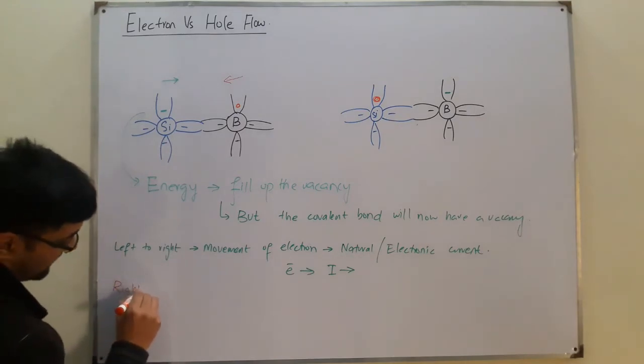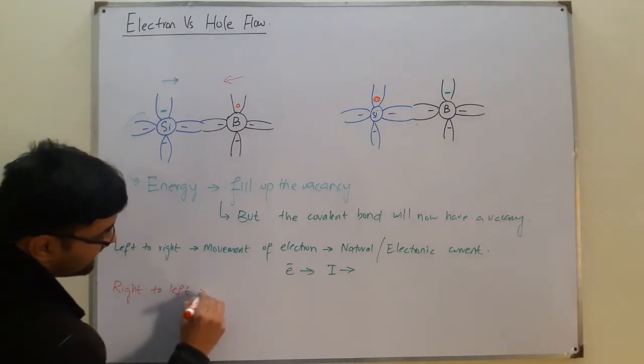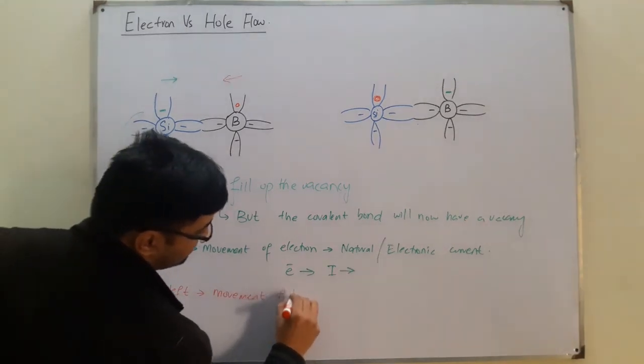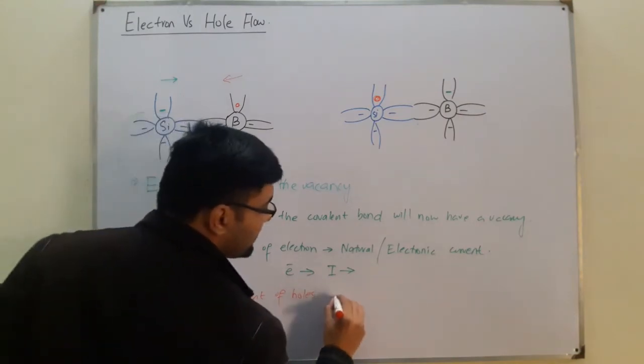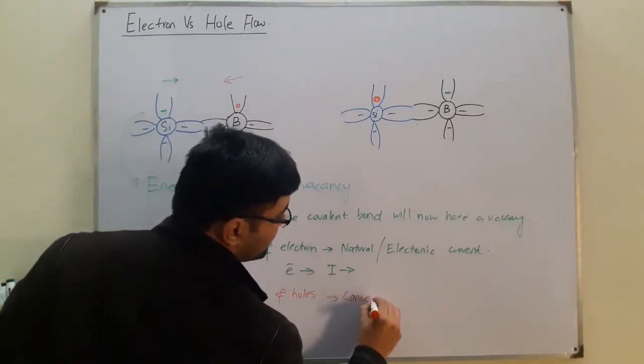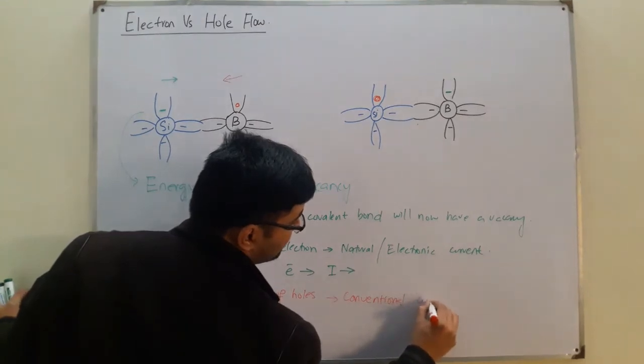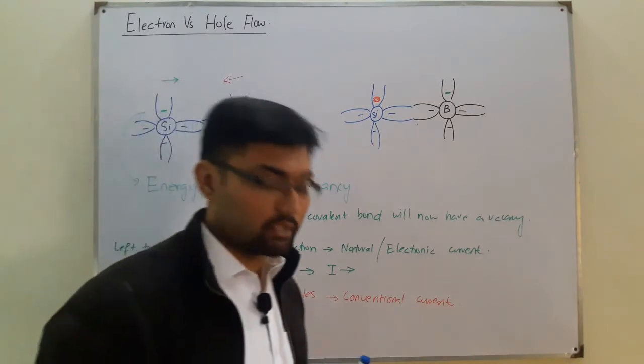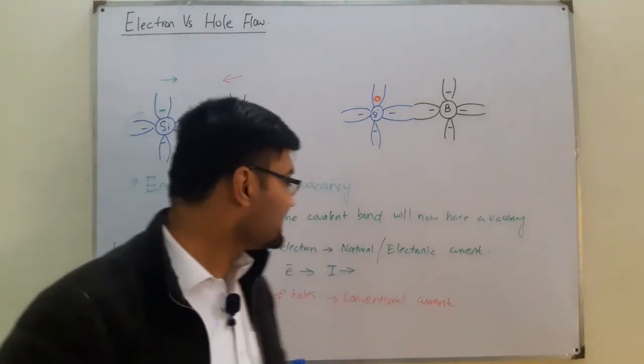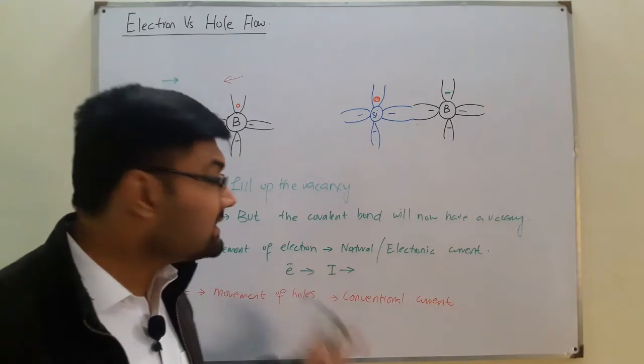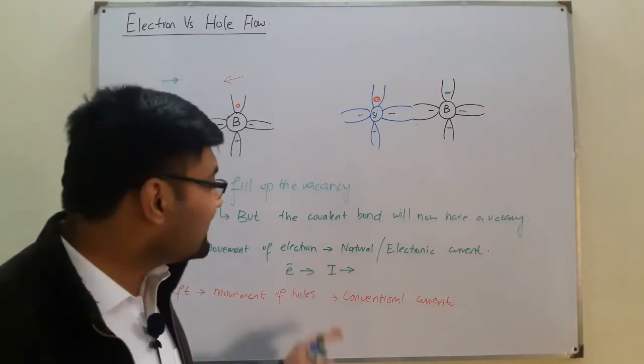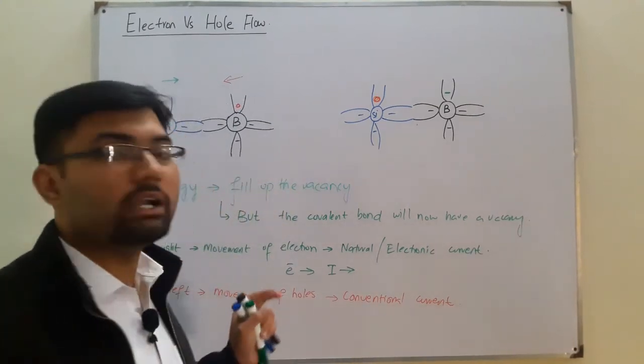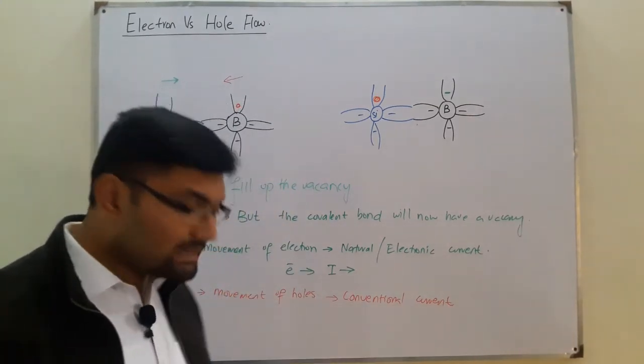And similarly, from right to left we had the movement of holes. And this movement of holes is called the conventional current. In the introduction video I showed you the Thomas Floyd book on which it was written that this is the conventional current version. Now this conventional current means that in this text all the currents that are supposed are due to the movement of holes.